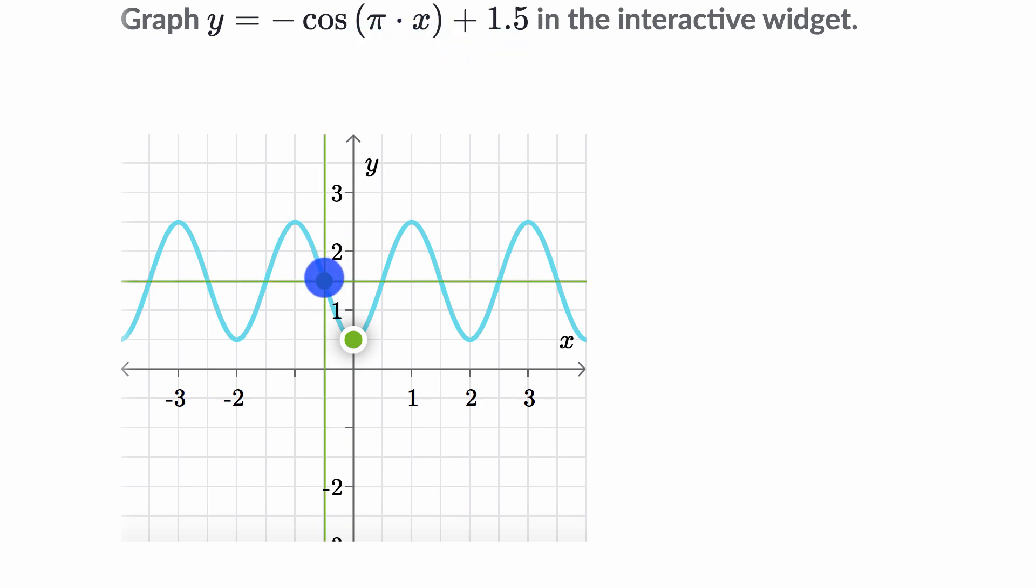And you can validate that that's our midline. We're still oscillating one above and one below. The negative sign, when cosine of pi times zero, that should be one, but then you take the negative of that, we get to negative one. You add 1.5 to that, you get to positive 0.5. And so this is all looking quite good.